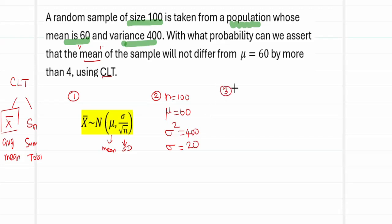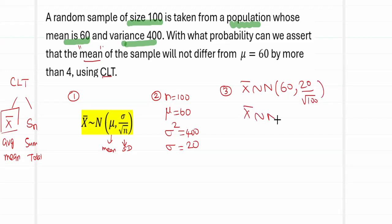Step three: fix the data into the formula. X̄ follows a normal distribution with mu = 60 and standard deviation sigma over root n, which is 20 divided by the square root of 100. Square root of 100 is 10, so 20 divided by 10 equals 2. Therefore, X̄ follows a normal distribution with mean 60 and standard deviation 2.